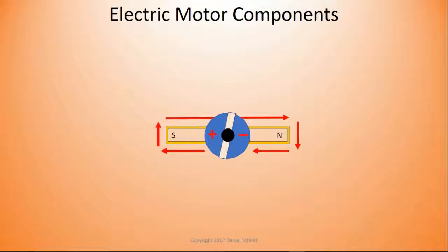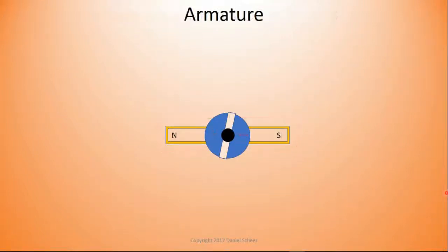Speaking of repelling, what would happen if we reversed the polarity of our electric current? Yes, a reversing of the flow direction of the current also reverses the north and south pole of the armature. This becomes very important for keeping an electric motor turning.